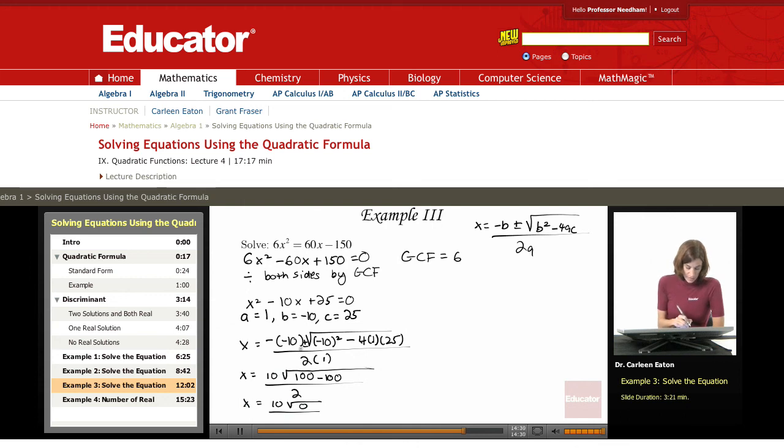It should be plus or minus right there. 10 plus or minus. So what I end up with is 10 plus or minus the square root of 0 divided by 2, which gives me 10 plus or minus 0 divided by 2, or x equals 5.